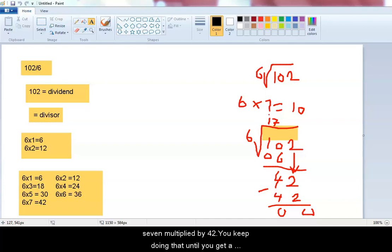Then you repeat the process again. 6 into 42, 7. 7 multiplied by 42. You keep doing that until you get a remainder of 0 or until you get a remainder that is less than 6.